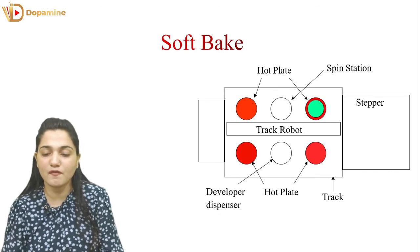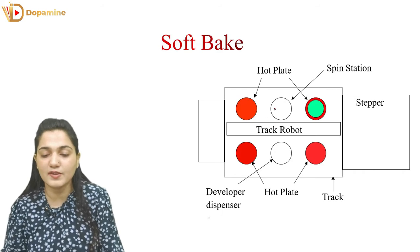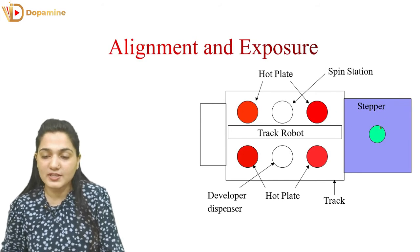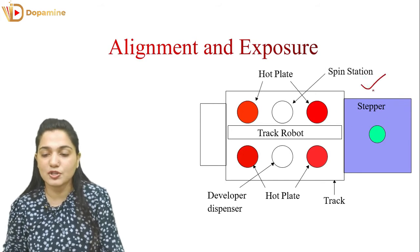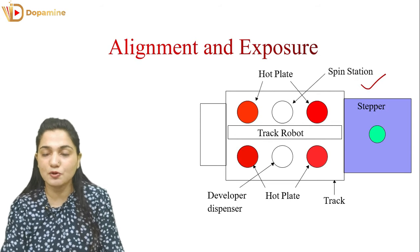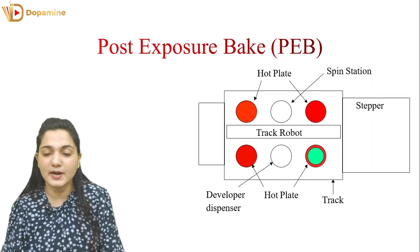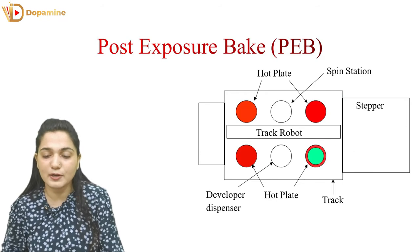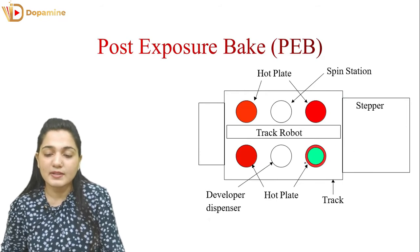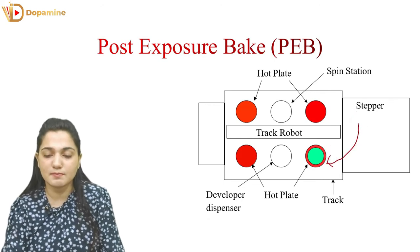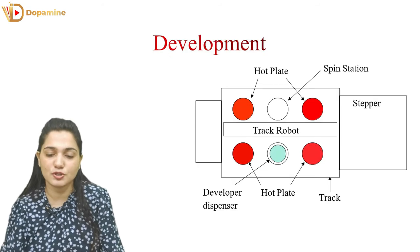Soft bake is done with the help of a hot plate — the Trek robot moves the wafer to the soft bake plate. After that, the wafer is moved to the stepper where alignment and exposure happen. After alignment and exposure, there are changes in the photoresist properties at particular locations. Then a post-exposure bake is performed using the hot plate, and the Trek robot moves the wafer from the stepper to the hot plate for this step.